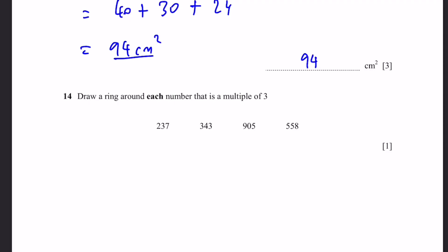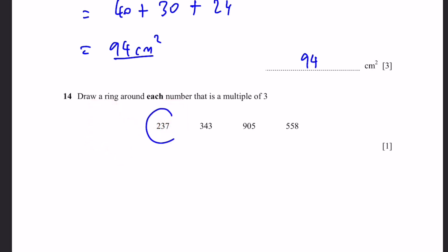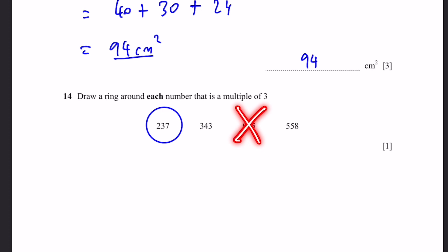Question 14. Circle each number that is a multiple of 3. To check, add the digits and see if the result is divisible by 3. For 237: digits sum to 12, and 12 ÷ 3 = 4, so 237 is divisible by 3. For 3 and the next number: digits sum to 10, and 10 ÷ 3 is not an integer, so it's not a multiple. For 905: digit sum is 14, not divisible by 3. For 558: digits sum to 18, and 18 ÷ 3 = 6, so 558 is a multiple of 3.